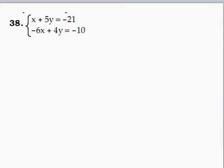So let's solve the first equation for X. That means we're going to need to move 5Y to the other side. So we'll get X is equal to negative 5Y minus 21.